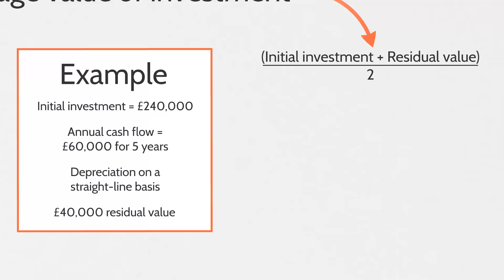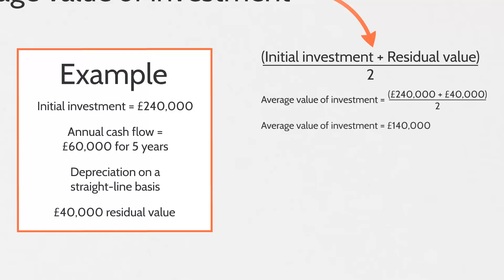We have £240,000 for the initial investment and £40,000 in residual value. So £240,000 plus £40,000 equals £280,000, divided by 2, gives us an average value of investment of £140,000.